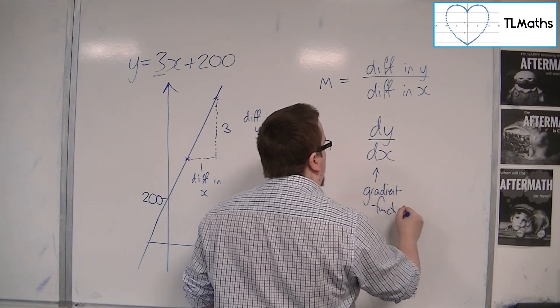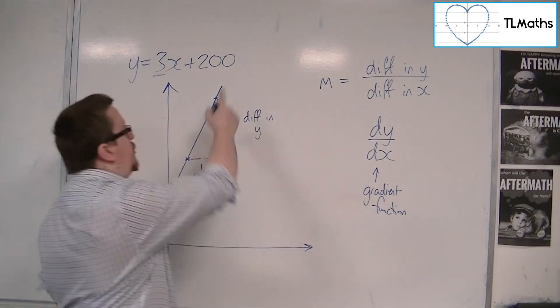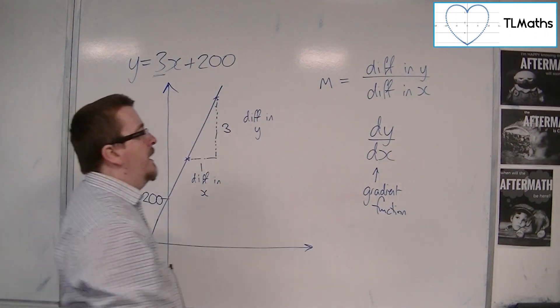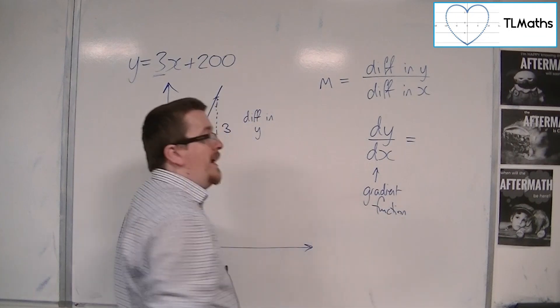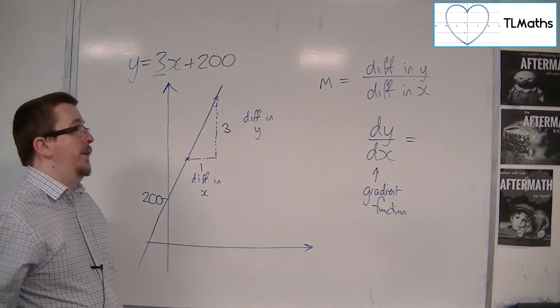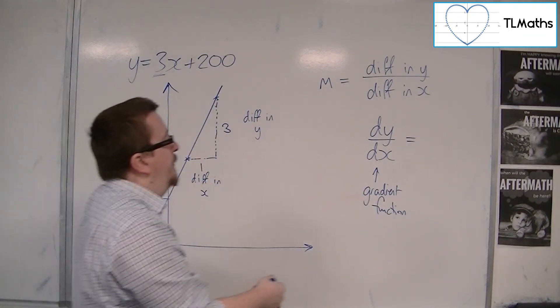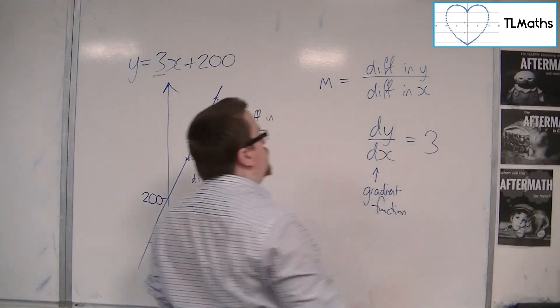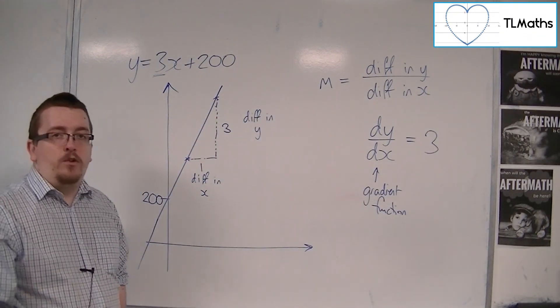Now, for a line, the gradient doesn't change no matter where you are. And so the gradient will remain fixed and constant. And in this case, it was 3. So we could write dy by dx is equal to 3.